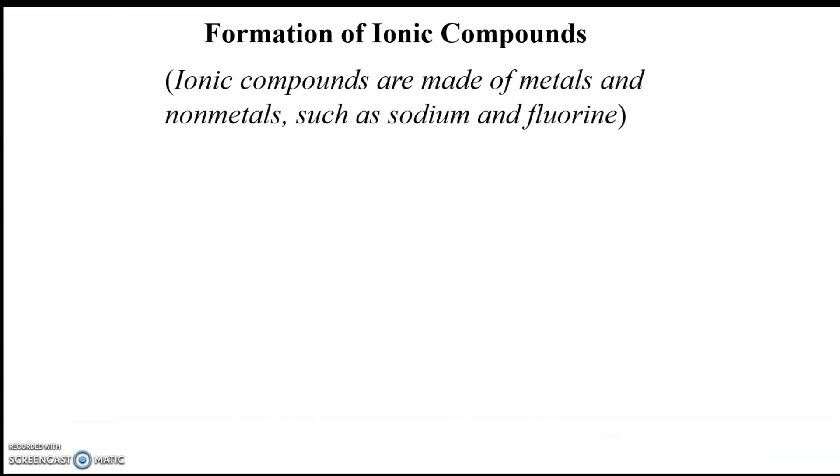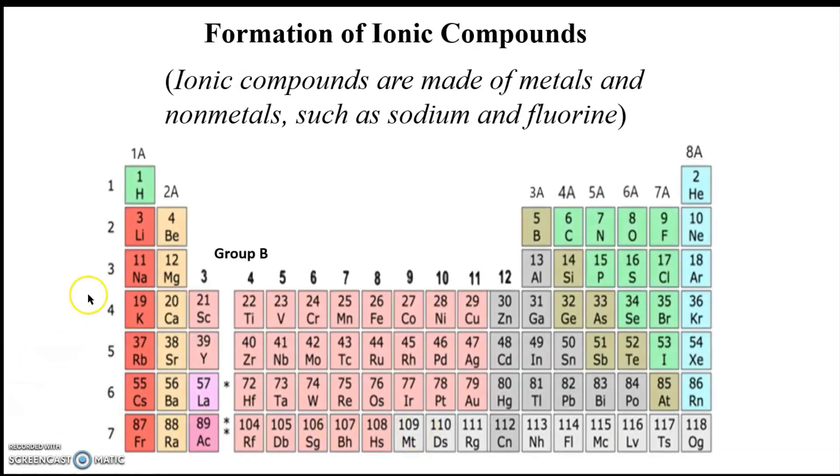The main way that you can tell, as a matter of fact, the way that you can tell an ionic compound from a molecular compound, a covalent compound, is that you always have a metal and a non-metal. For example, sodium and fluorine.